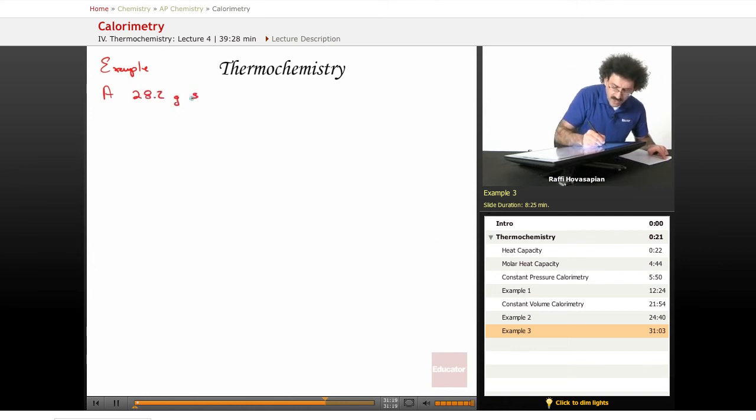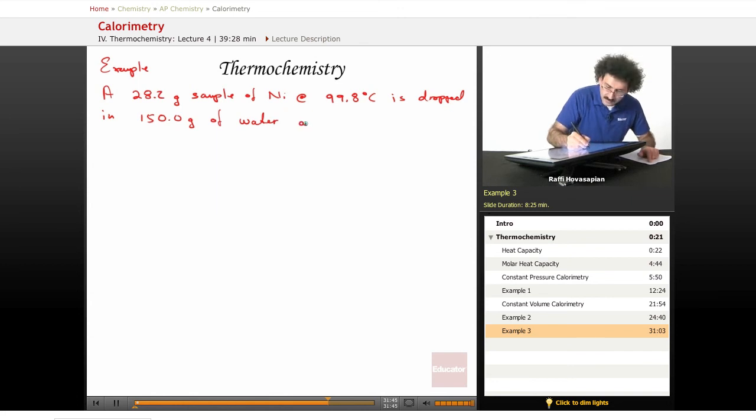A 28.2 gram sample of nickel at 99.8 degrees Celsius is placed in, is dropped in if you will, 150.0 grams of water at 23.5 degrees Celsius. So the nickel is at 99.8 degrees Celsius. We drop it in water that's at 23.5 degrees Celsius. That's what this says.